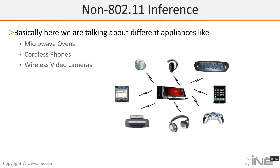This last type — non-802.11 interference — has nothing to do with other APs, but other devices. Things like microwave ovens, cordless phones, wireless video cameras, wireless printers, mics, Bluetooth devices, wireless keyboards, phones, game controllers, and wireless headsets — all those things can give you interference if you're running 2.4 GHz. Many of these wireless devices are not part of the 802.11 standard, but they operate at or very near the 2.4 GHz frequency, enough to cause major issues.